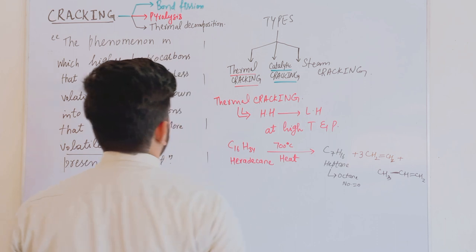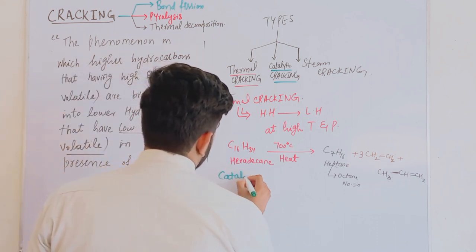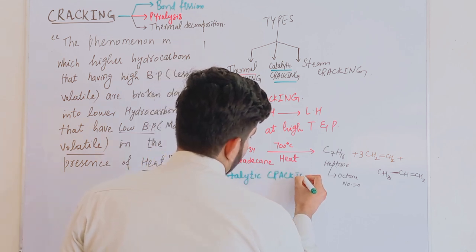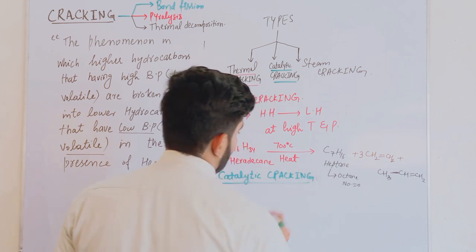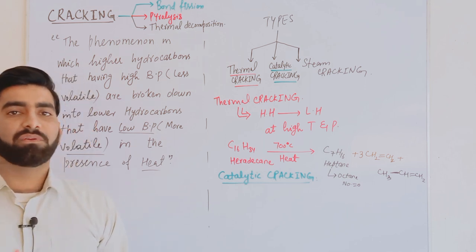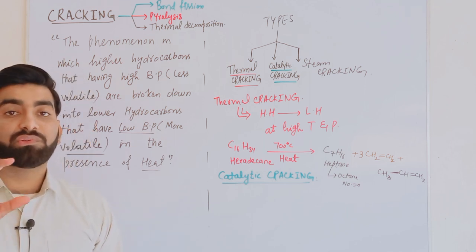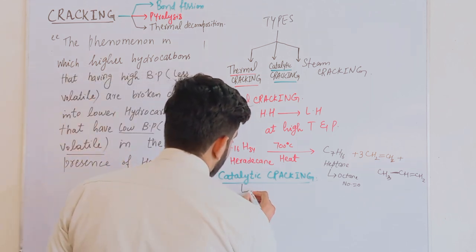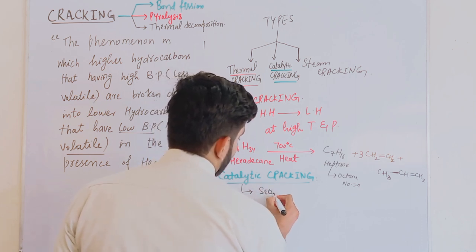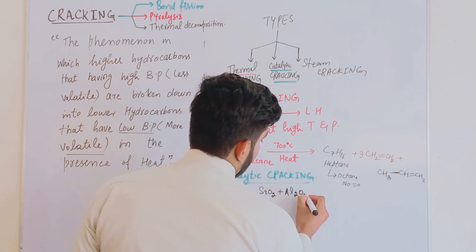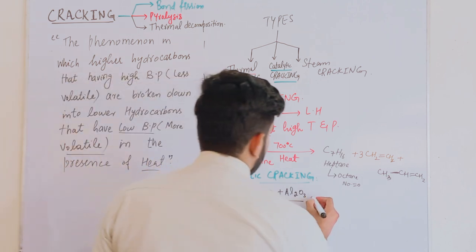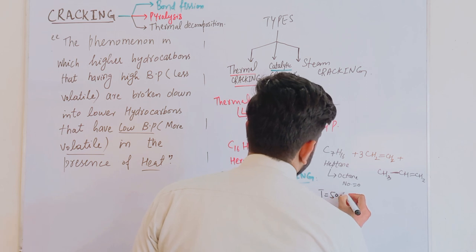The second type is catalytic cracking. In catalytic cracking, higher hydrocarbons are broken down into lower hydrocarbons at a lower temperature of about 500°C and at low pressure, in the presence of a suitable catalyst. For example, a mixture of silica and alumina is used as the catalyst.